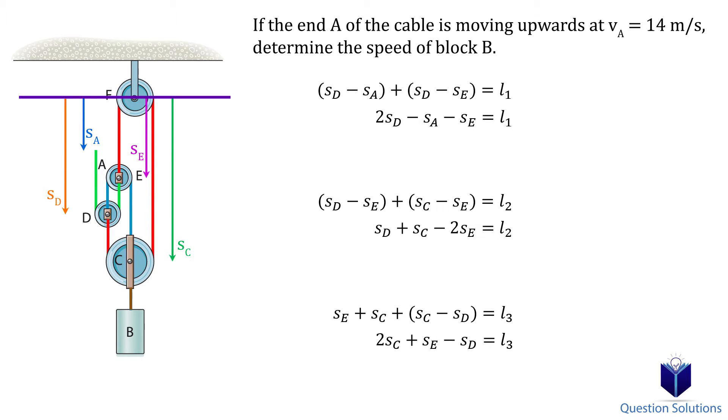Now we can take the derivative which gives us our velocity equations. All we need to do now is plug in vA equals negative 14 meters per second and solve the equations to get our answer. It's negative 14 meters per second because we chose downwards to be positive, but the cable is being pulled up, so it's a negative value.